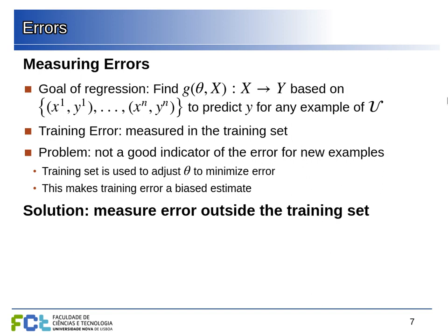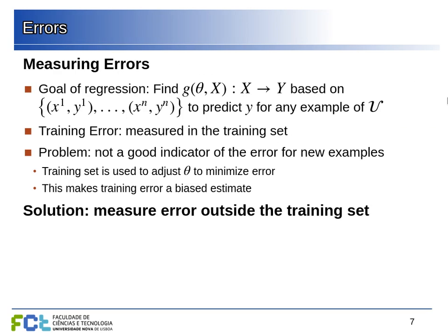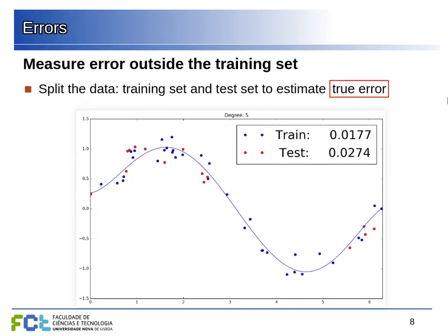The problem is that the training error is not a good estimate of the error we'll have on new examples. The training error can be very small because the line passes through the data points, but the error outside this dataset would likely be large. We cannot just use the training error because we would be underestimating the future error. We need to measure the error outside the training set.